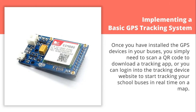Step 3: Implementing a basic GPS tracking system. Once you have installed the GPS devices in your buses, you simply need to scan a QR code to download a tracking app, or log in to the tracking device website, to start tracking your school bus in real time on a map. School authorities can track the distance covered as well as the speed of the buses. They can create bus routes, set up geofences for routes, bus stops and destinations, and receive alerts for deviation and speeding incidents. They can also look at route history and analyse basic reports for on-time performance and much more.